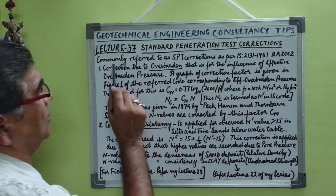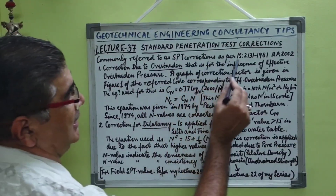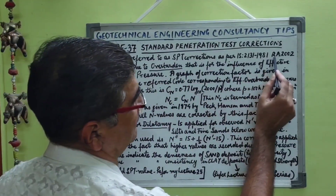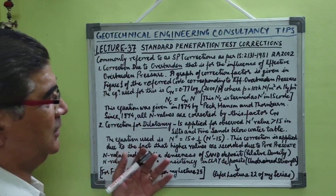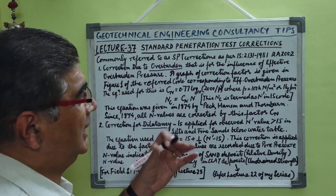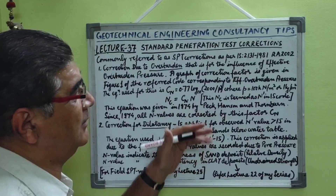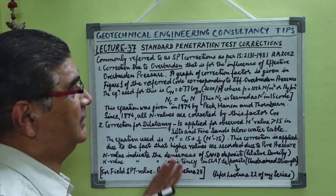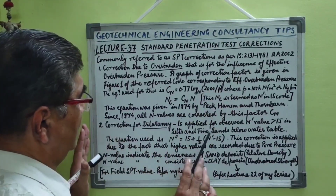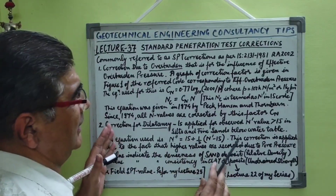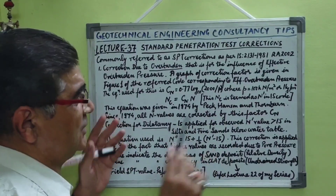These standard penetration test corrections are commonly referred to as SPT corrections, as per IS 2131:1981, reaffirmed 2002. This code may have been further reaffirmed, but the latest update I have is this version.